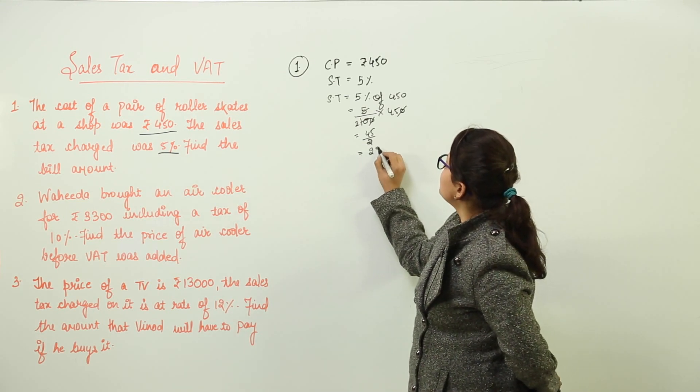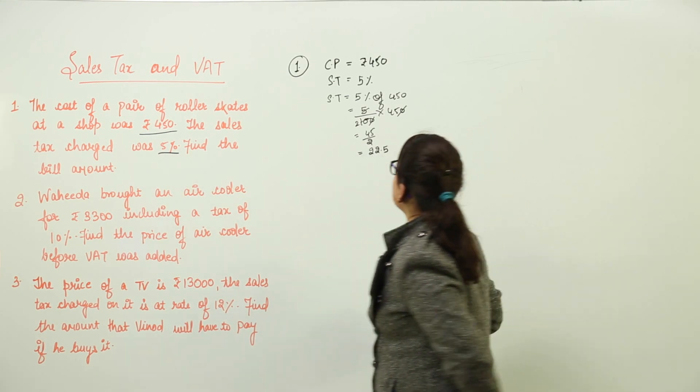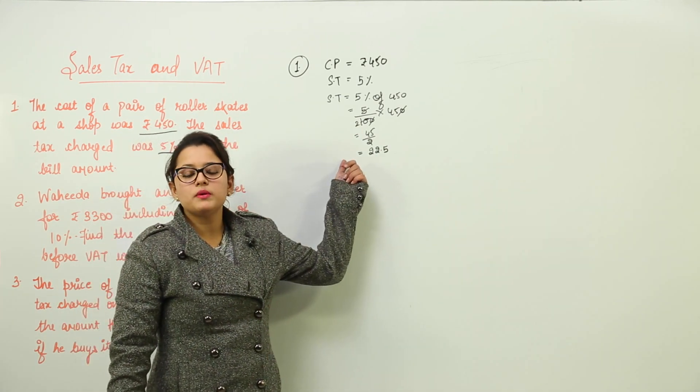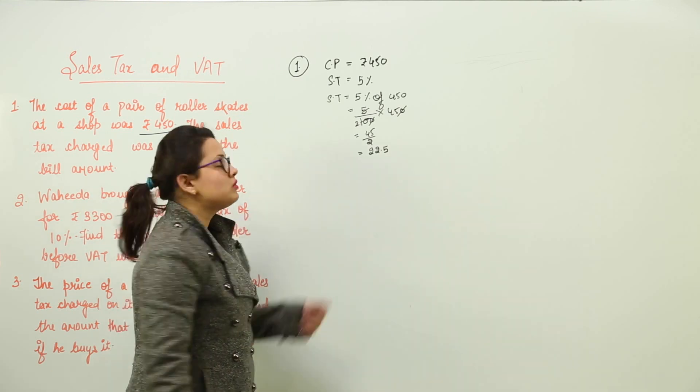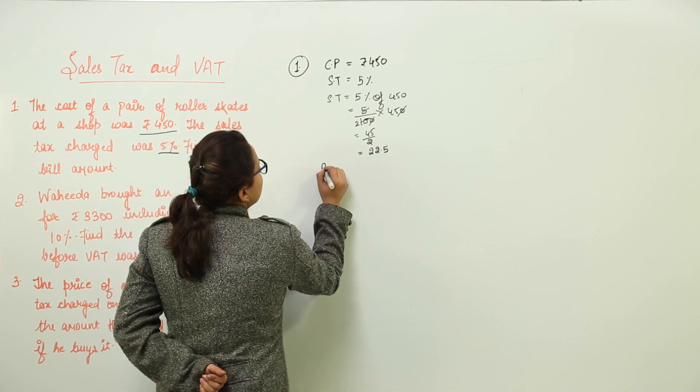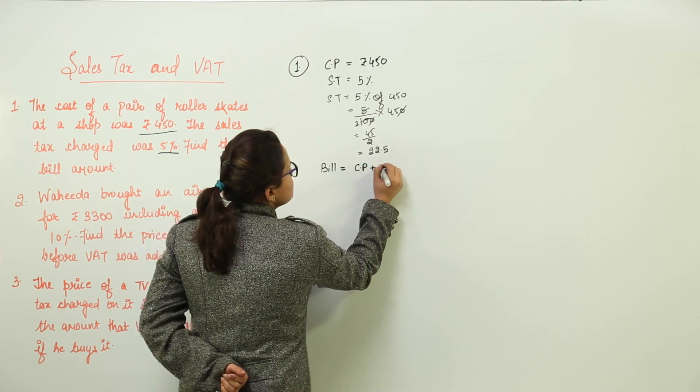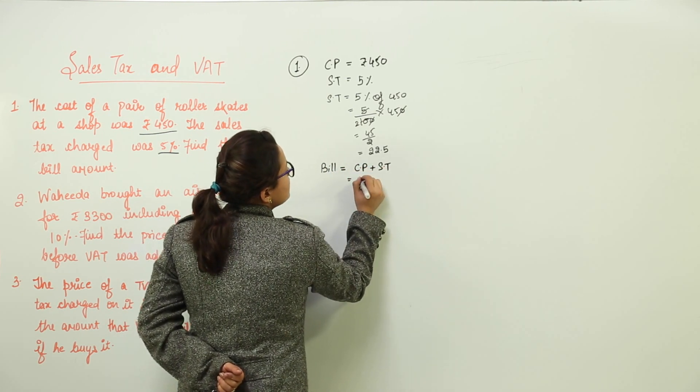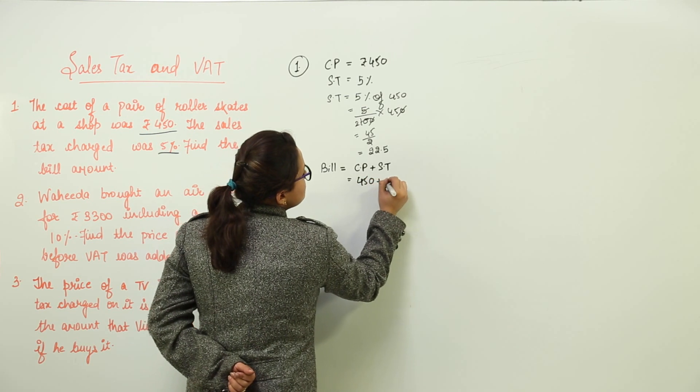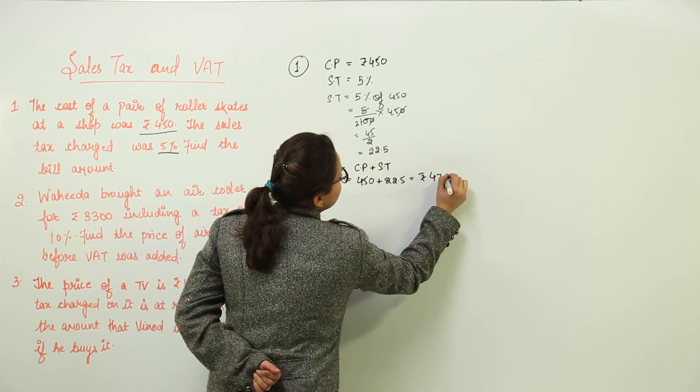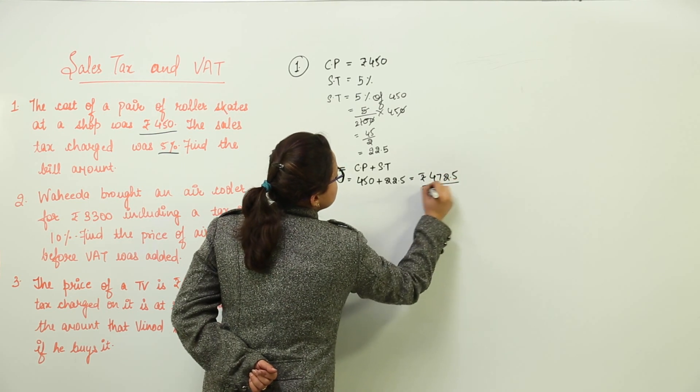Here the zeros get cancelled. We get 45 upon 2, that is equal to 22.5. Now the sales tax that has been applied over here would be ₹22.5. The bill amount would be equal to the cost price plus the sales tax, that is equal to 450 plus 22.5, equal to ₹472.5. Understood?